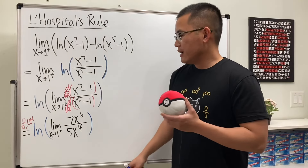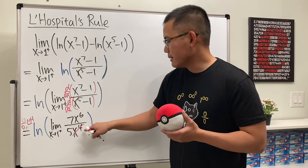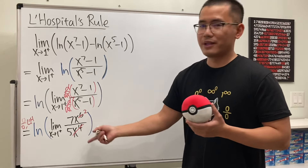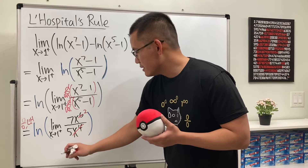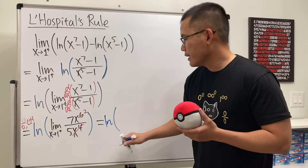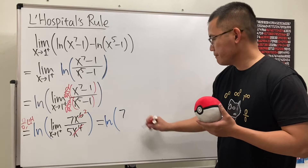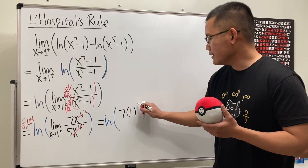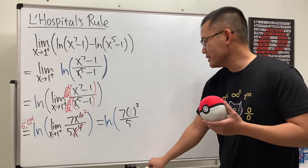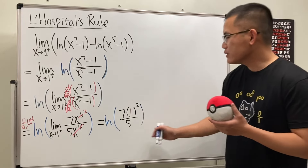We can cancel x terms, and 6 minus 4 is 2, so we have x to the 2nd power remaining. We can just put 1 in for x. We get natural log of 7 times 1 squared over 5, which is 7 over 5. But be really careful — the answer is natural log of 7 over 5.